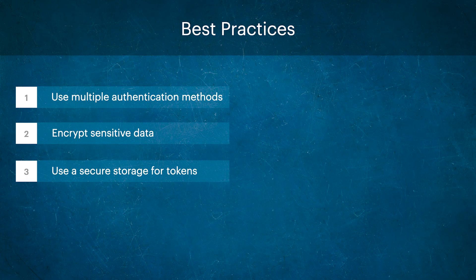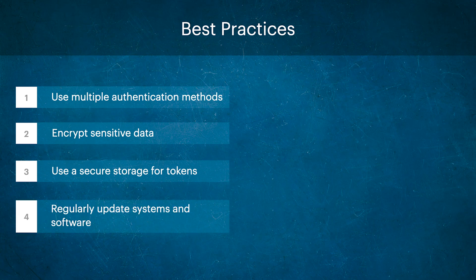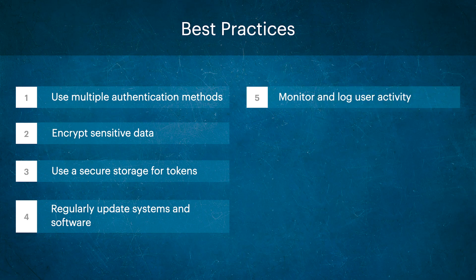Third, use secure storage for tokens — security tokens should be stored in a secure location such as a Hardware Security Module, also called HSM, or a secure element in a device, to protect them from physical attacks and unauthorized access. Fourth, regularly update systems and software to patch known security vulnerabilities and keep the system up to date with the latest security features. Fifth, monitor and log user activity to detect any suspicious activity or malicious behavior, and to investigate any security breaches that may occur.